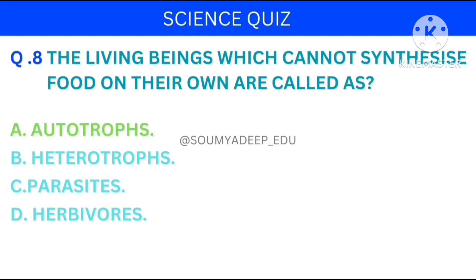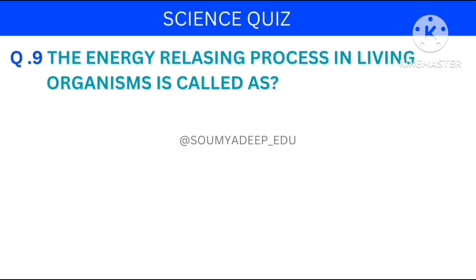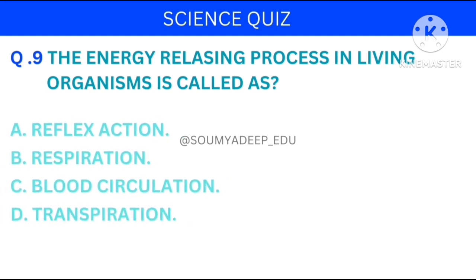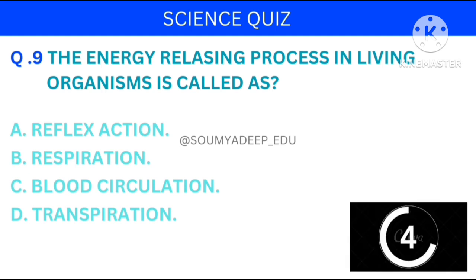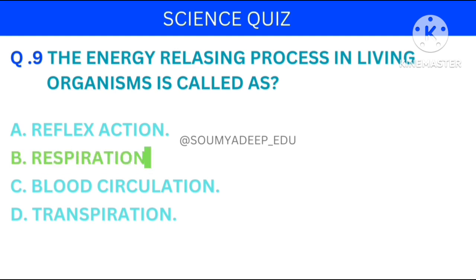The answer is autotrophs. The energy releasing process in living organisms is called as? The options are: reflex action, respiration, blood circulation, transpiration. Your time starts now. The answer is respiration.